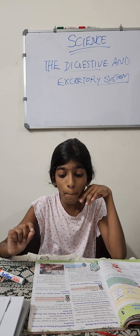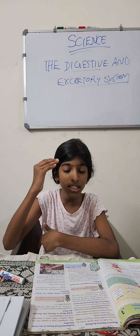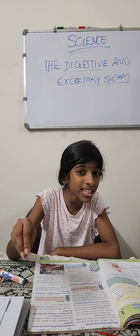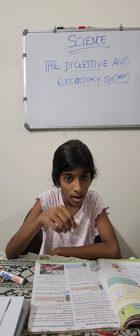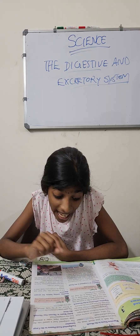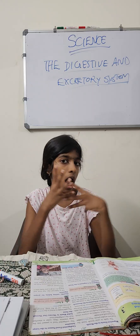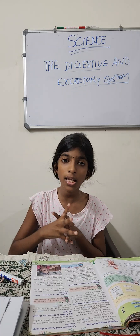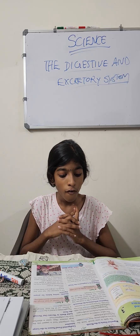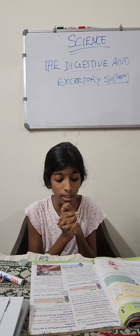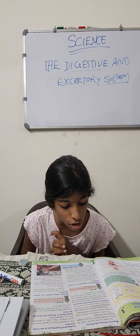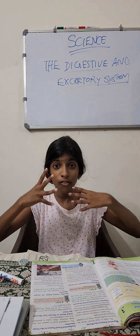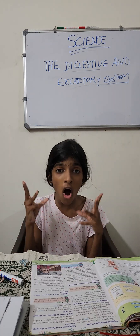Undigested food passes to the small intestine. The digestion is completed in the small intestine. From the stomach, the food goes into the small intestine where digestive juices are added.